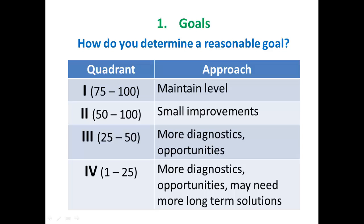If a school is in Quadrant 2, you may look at small improvements to get it a little bit higher, since it's already above average. When you look at Quadrants 3 and 4, we're looking more at opportunities, so those goals should include more diagnostics and assessment to find where the opportunities are. In Quadrant 4, some longer-term solutions and capital investments may be required.